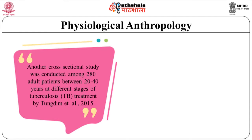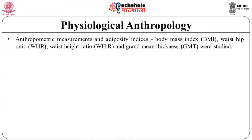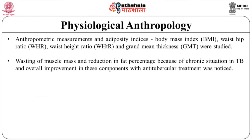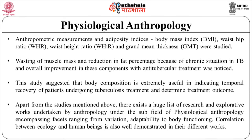A cross-sectional study was conducted among 280 adult patients aged 20 to 40 years at different stages of TB treatment by Tundim et al. in 2015. Data was gathered from various DOTS centers in Manipur, North East India. Anthropometric measurements and adiposity indices like BMI, waist-hip ratio, waist-height ratio, and grand mean thickness were studied. Wasting of muscle mass and reduction in fat percentage due to the chronic situation in TB, and overall improvement in these components with anti-tubercular treatment, was noticed. This study suggested that body composition is extremely useful in indicating temporal recovery of patients undergoing tuberculosis treatment.